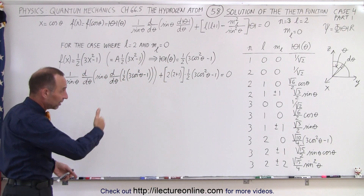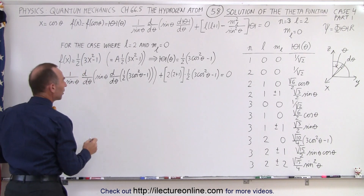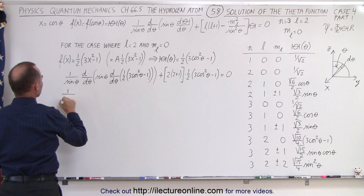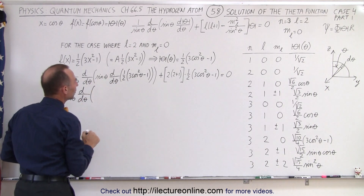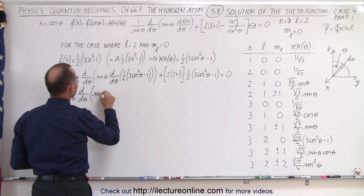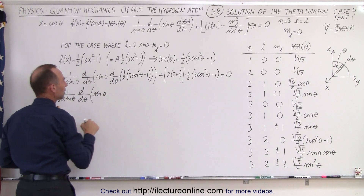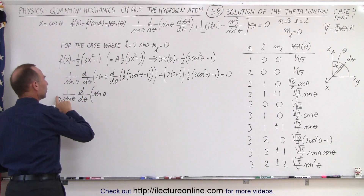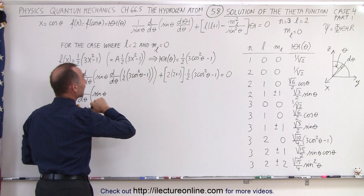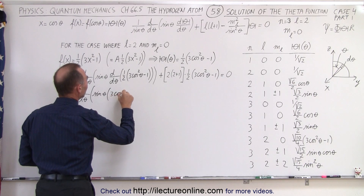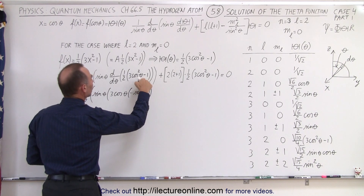We're going to work this out and show that the left side equals the right side. First, let's go ahead and take the derivative. So we have 1 over the sine of theta times the derivative of what's inside the parentheses — that is, sine of theta times the derivative of the function. If I take the derivative of the cosine squared term, I take the exponent, bring it up front, the 2's will cancel, and we're left with 3 times the cosine of theta times the derivative of cosine of theta, which is negative sine of theta. The derivative of the negative 1 term is of course 0.